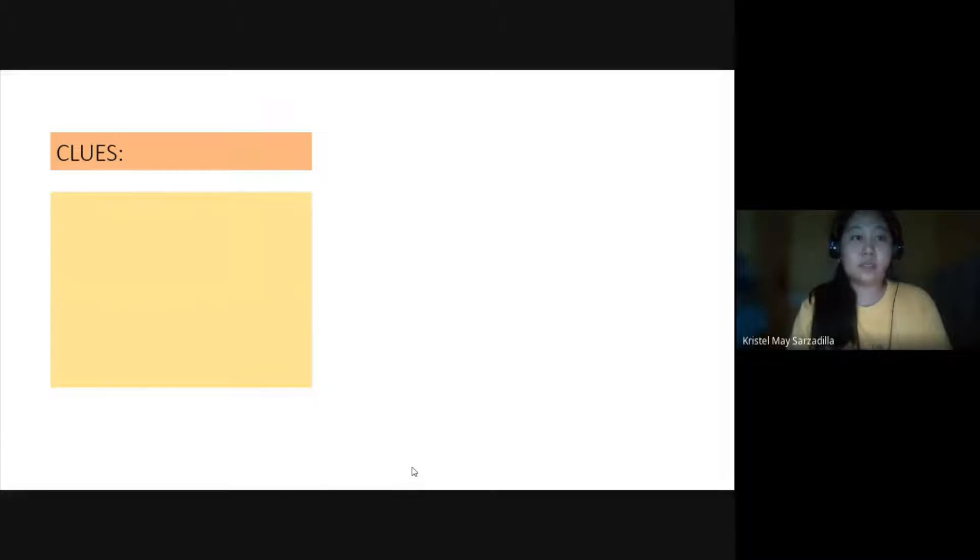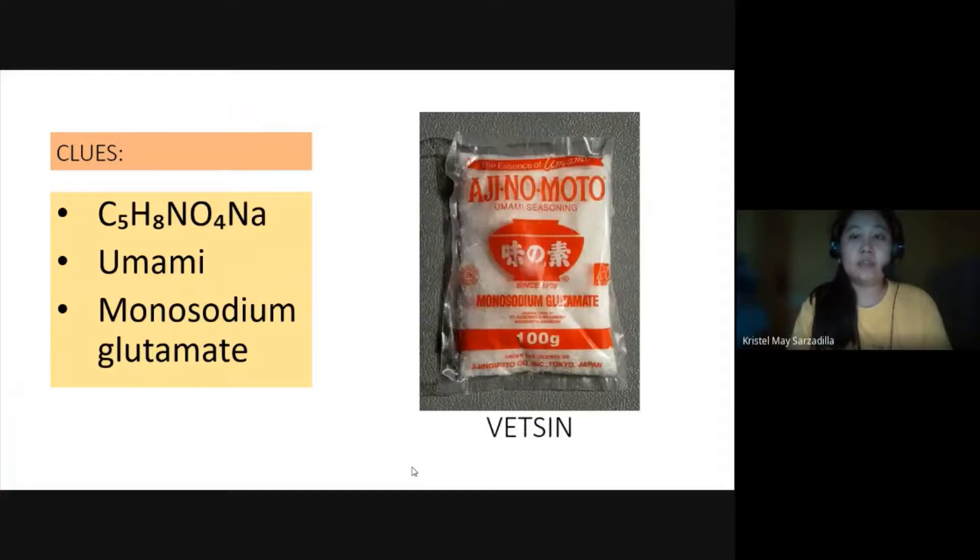Next, we have here the chemical formula C5H8NO4Na. Second clue, umami. Third clue, its chemical name is monosodium glutamate or MSG. Yes, it is vetsin.